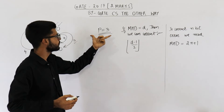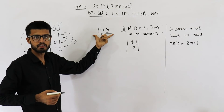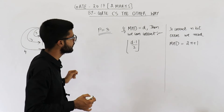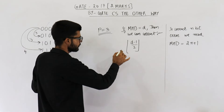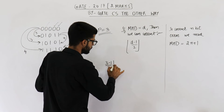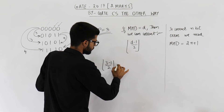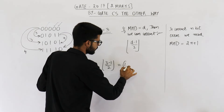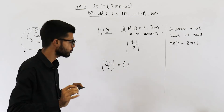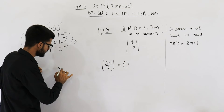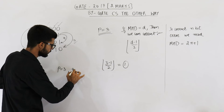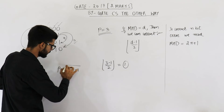Let us find out. The value of D is three — the minimum Hamming distance we are getting is three. So that means we can correct one bit error. So the answer to this question is P is equal to three and Q is equal to one.